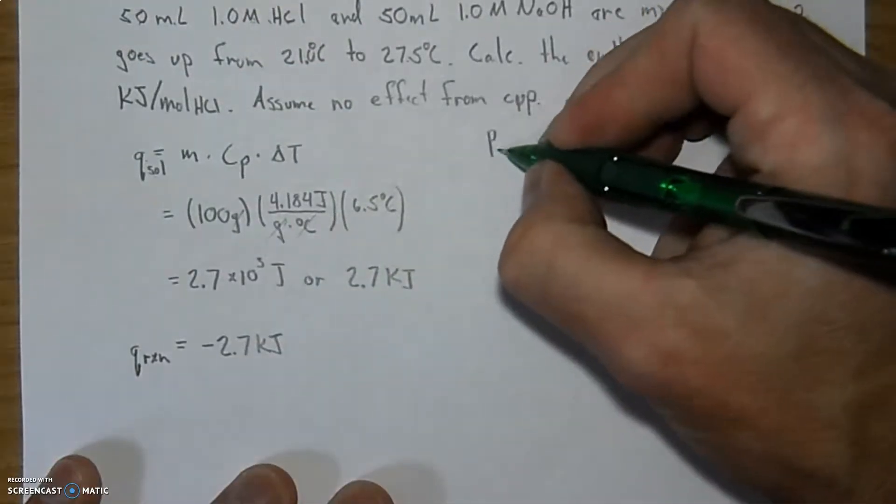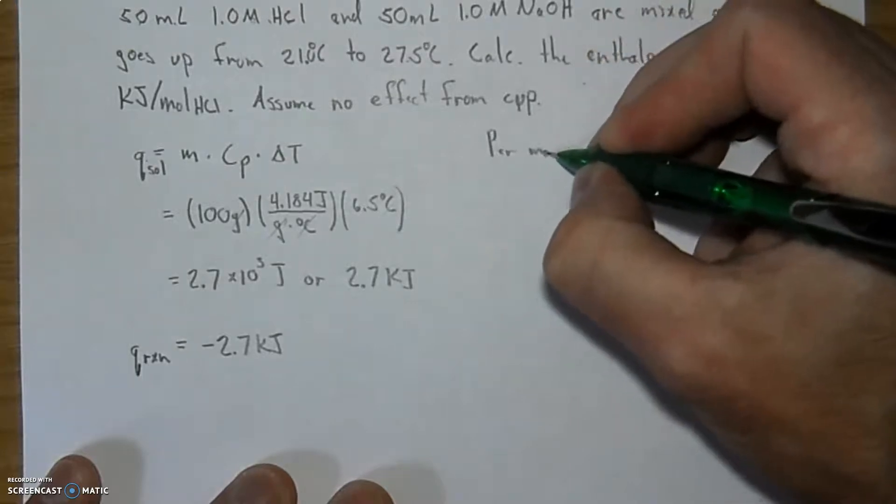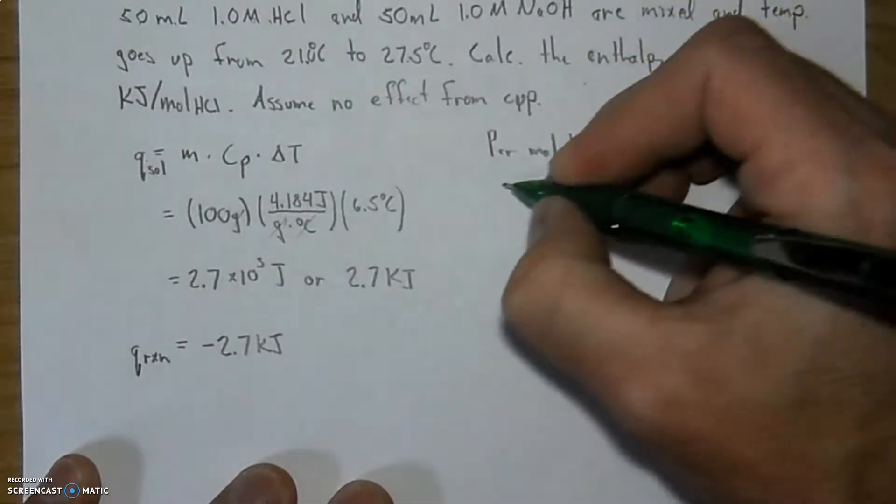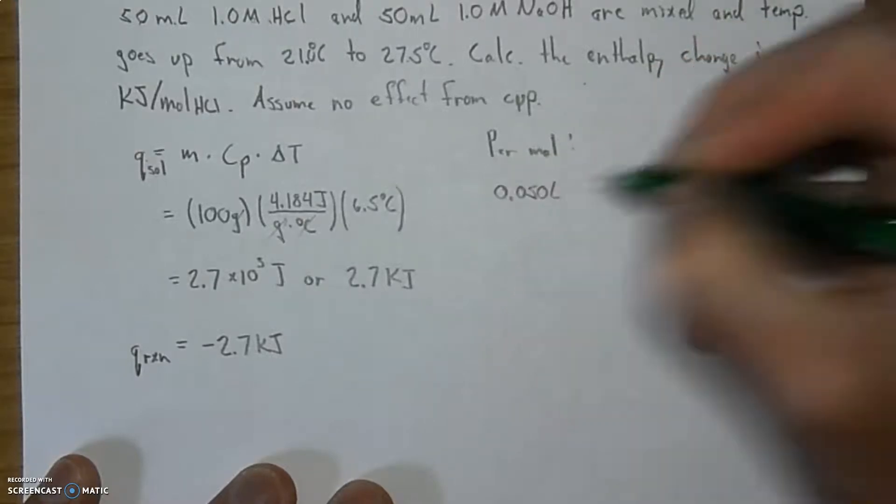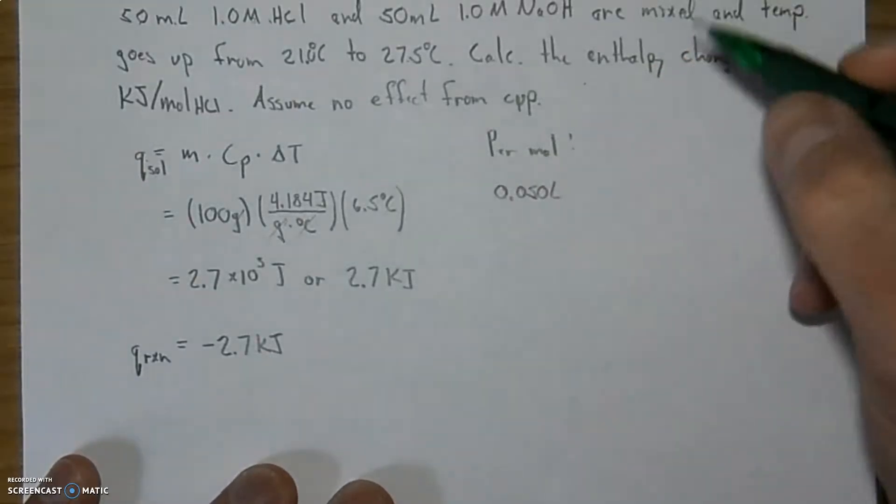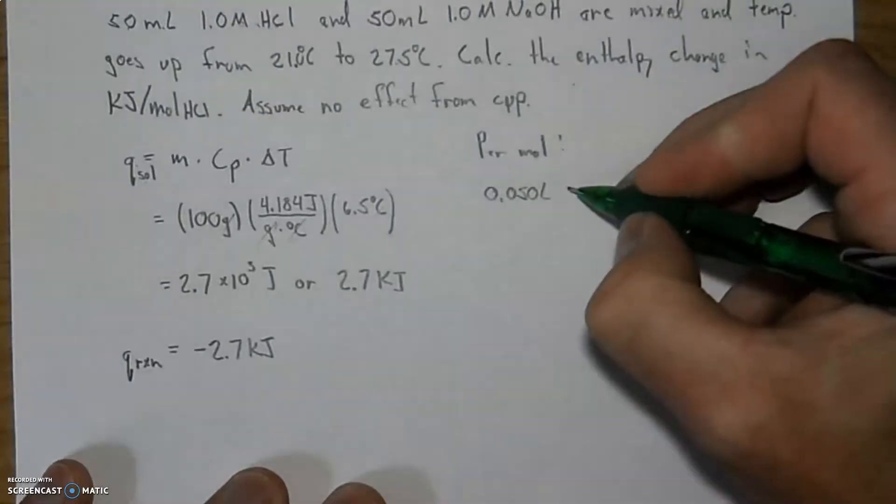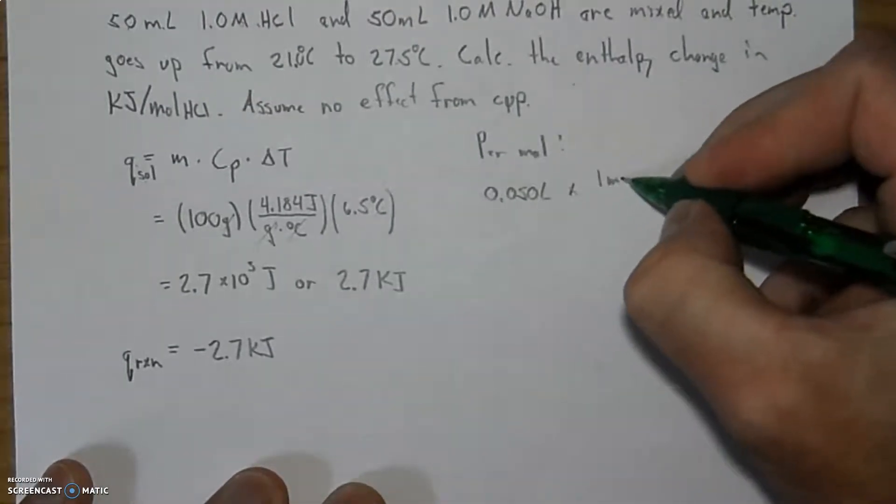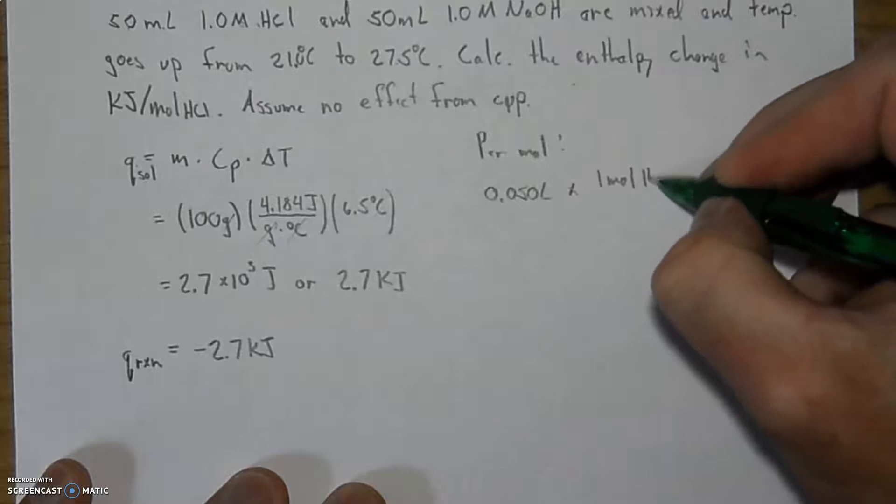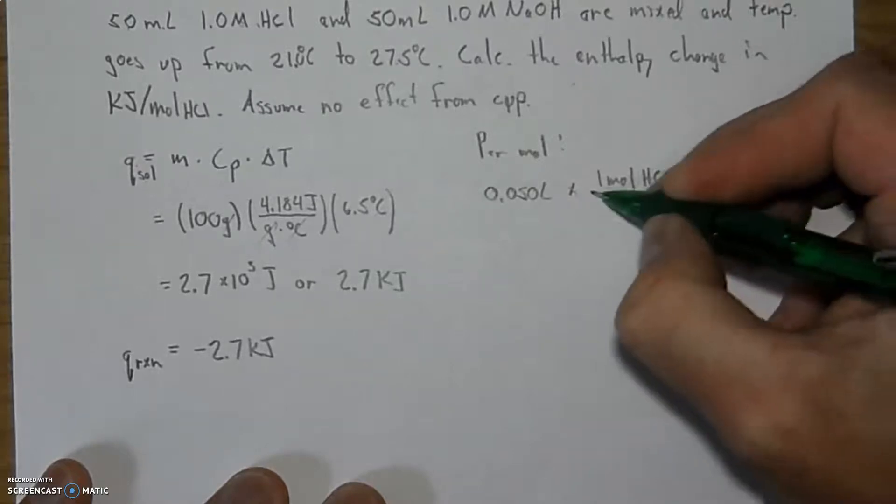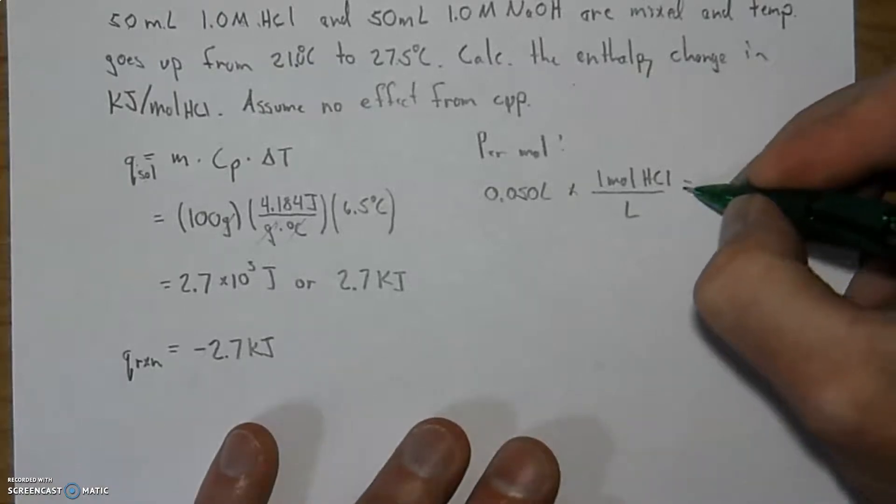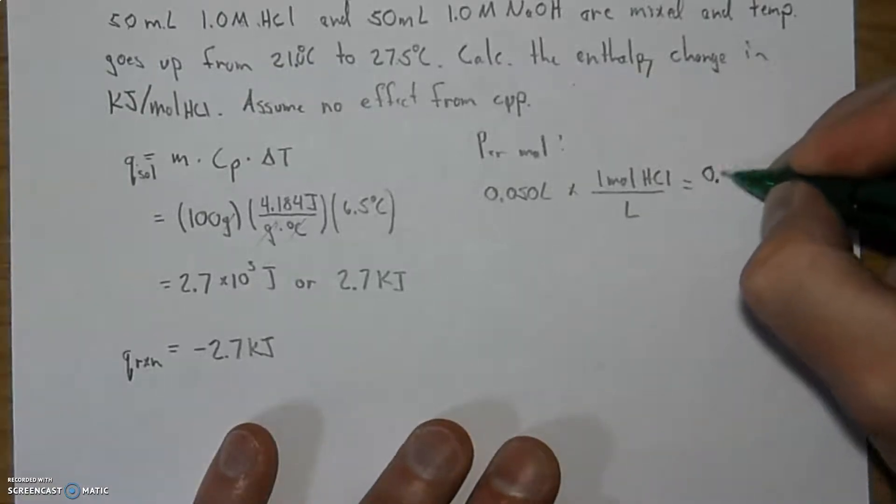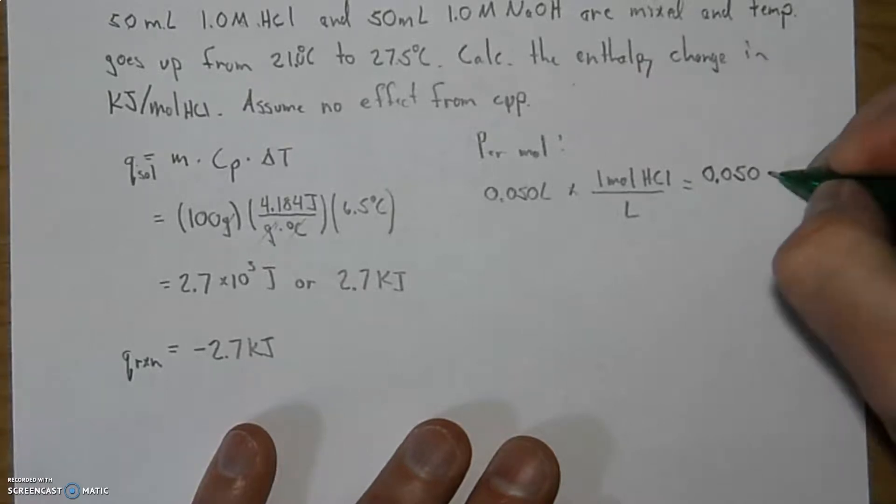So based upon the per mole thing, we will say that there is 0.050 liters. I have to be in liters, not milliliters. I'm going to multiply that times the moles of the HCl. Very conveniently, it is one mole per liter. So I was going to get my calculator out for this, but I think I'm all right. 0.050 moles.